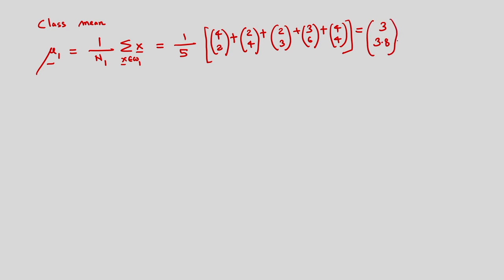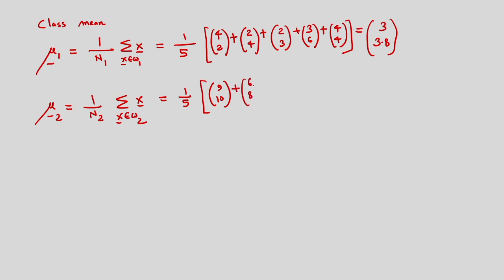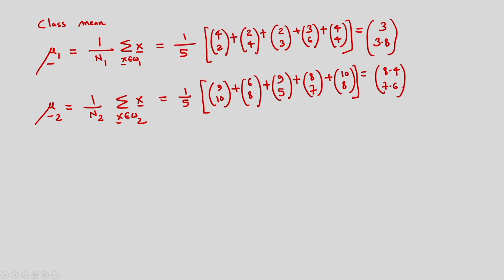Similarly I can determine the mean mu 2, that is 1 by n2 summation of x belonging to class omega 2. It is 1 by 5 times: (9,10) + (6,8) + (9,5) + (8,7) + (10,8). Considering 5 samples, the class mean is 8.4 and 7.6 — this is the second mean mu 2.